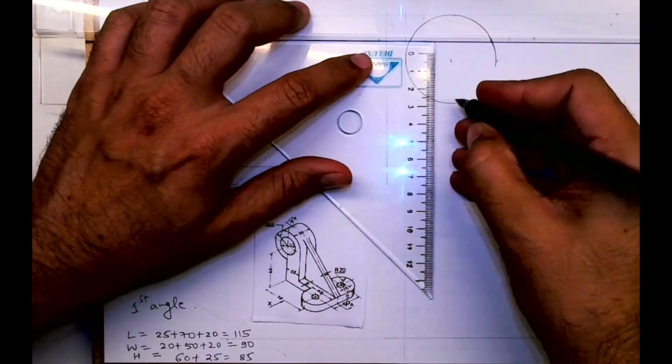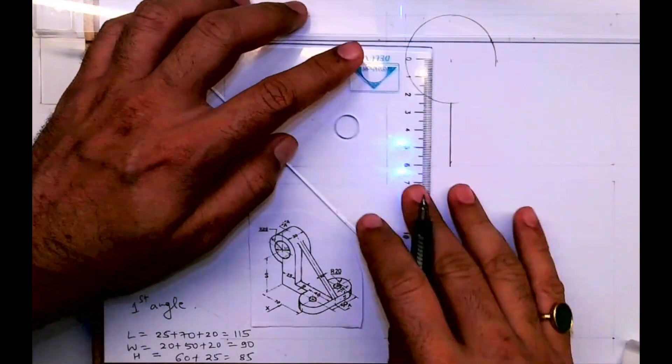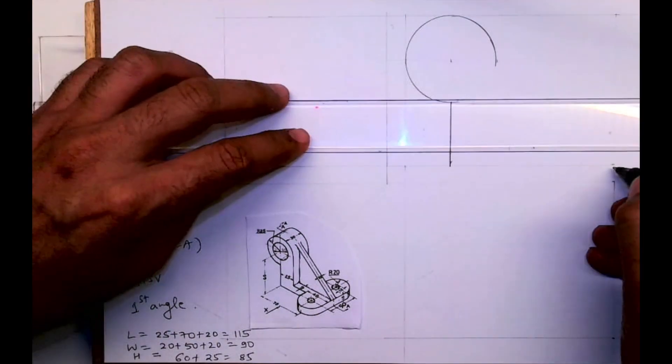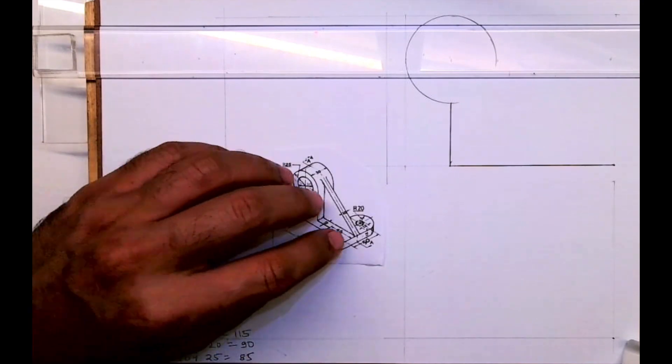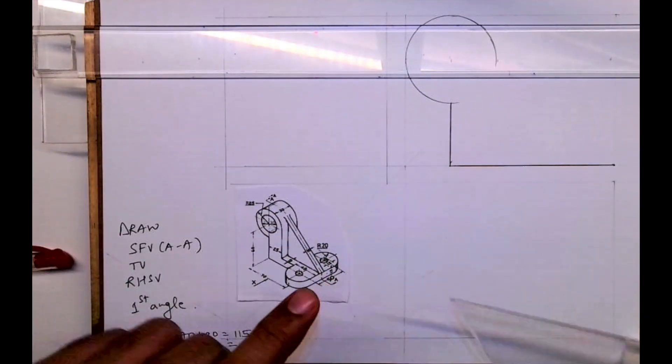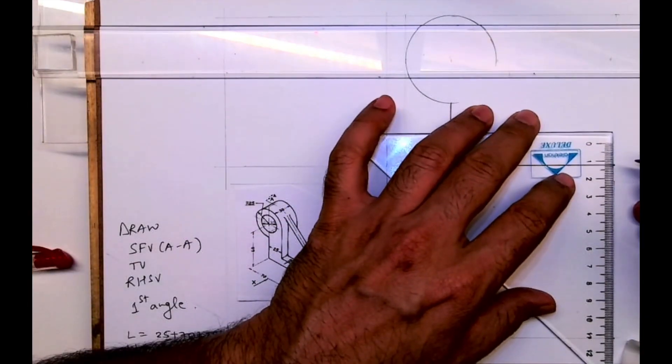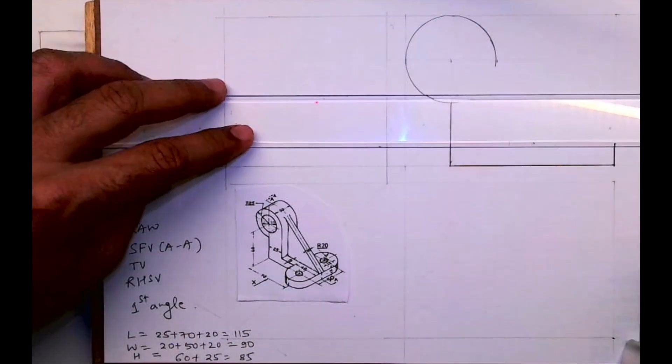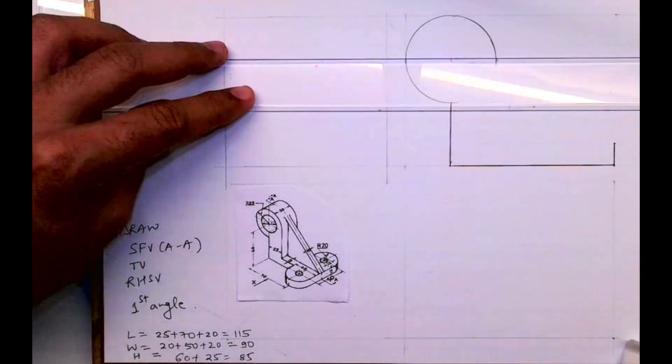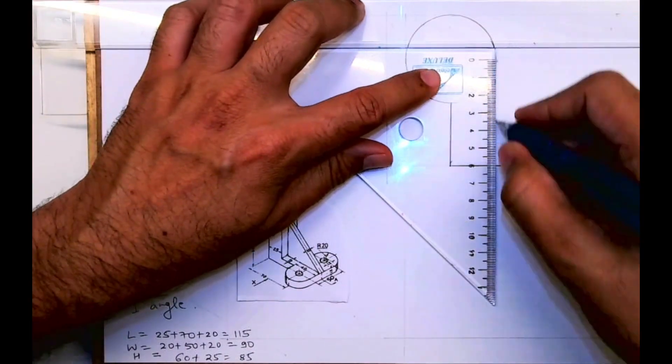We can draw vertical line from here and horizontal line. So in front view it will look like this. Then this height is 12, and then you draw horizontal line and from here you draw vertical line.